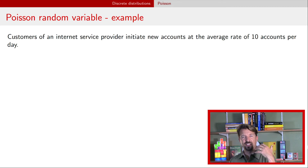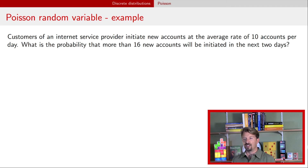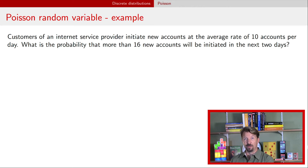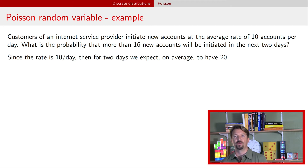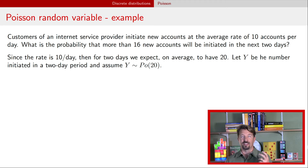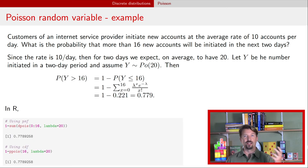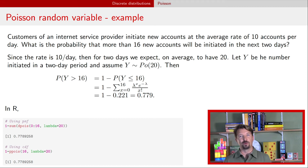We can apply this to the internet service provider example. If we ask how many customers sign up over two days rather than one, and assuming independence, we have a Poisson with rate 10 for day one and rate 10 for day two. Their sum is a Poisson with rate 20. We can then calculate the probability that more than 16 accounts are activated: that is 1 minus P(X ≤ 16) with rate 20. Using software, we find it's about 70% that more than 16 accounts will be activated over two days.